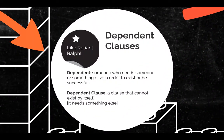Now let's talk about dependent clauses. The word dependent means someone or something that needs someone else or something else in order to exist or be successful. It's needy — it needs something else. A dependent clause is a clause that cannot exist by itself. It cannot create a sentence by itself. It needs something else.